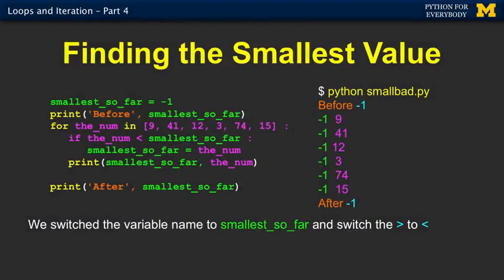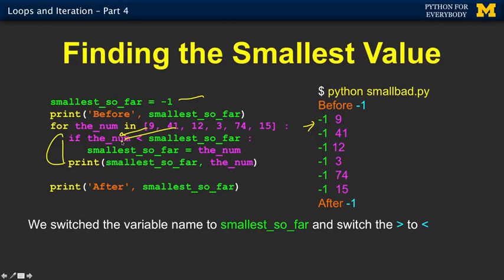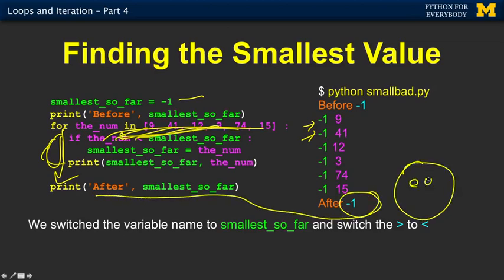This is what happens when you run it. You start out — smallest so far is negative one. We come in with nine: is nine less than negative one? No, it is not. So we skip — the smallest we've seen so far is negative one. Is 41 less than negative one? No. Is 12? No. Is three smaller than negative one? No. Is 74? No. Is 15? No. Out we come, and the smallest we've seen so far is negative one. So what's the flaw in our logic? First off, the word 'smallest so far' doesn't mean anything — this could be gorp or zap or x. Just changing the variable name to say 'smallest so far' is highly misleading.